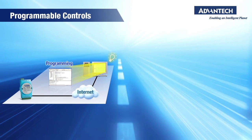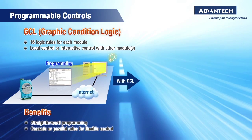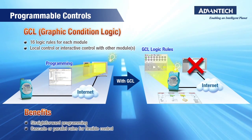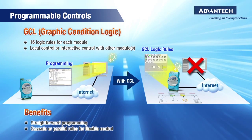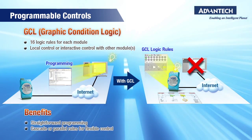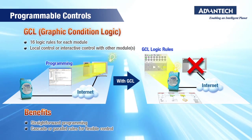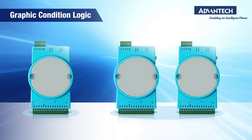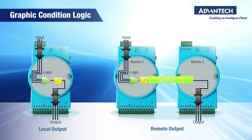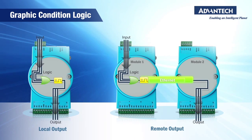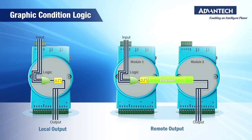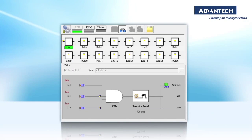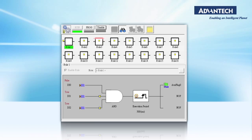Advantech's customers suggested that adding simple control to the peer-to-peer function would greatly enhance the utility of the Atom6000 series, so Advantech created Graphic Condition Logic, or GCL. This allows users to program the modules and control output based on logical input combinations within a single module or between multiple modules. GCL and P2P configuration is included in the AtomApex.net utility.